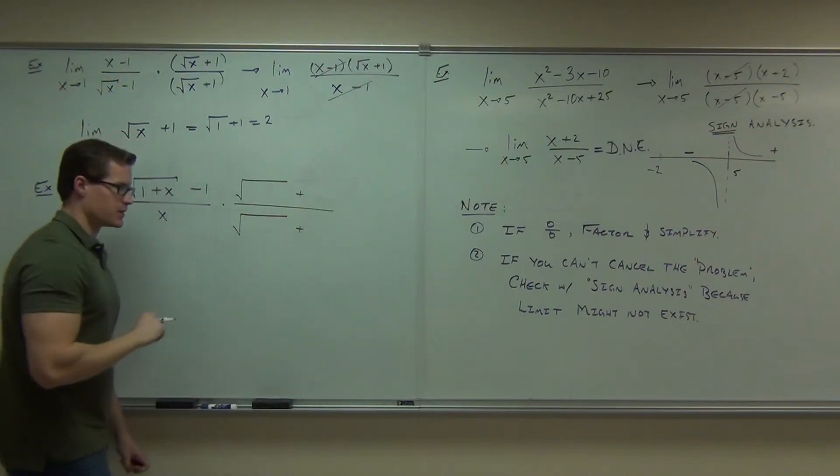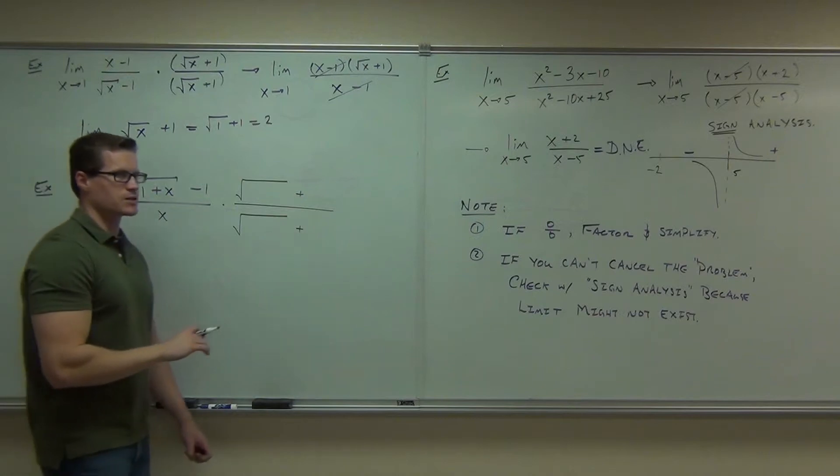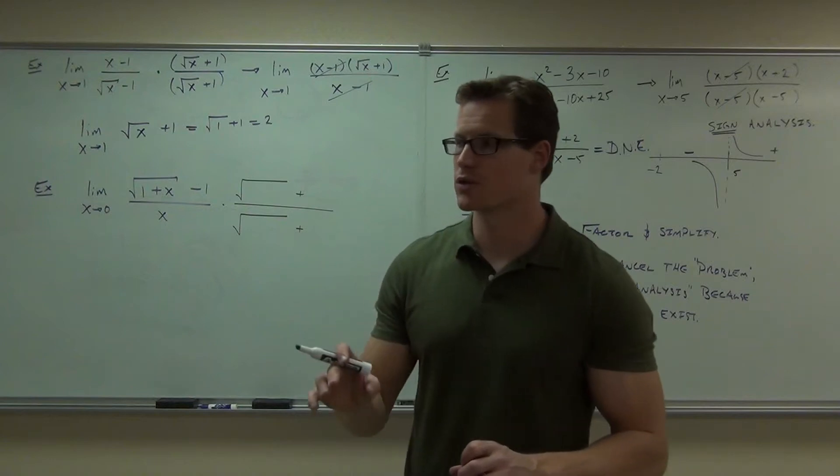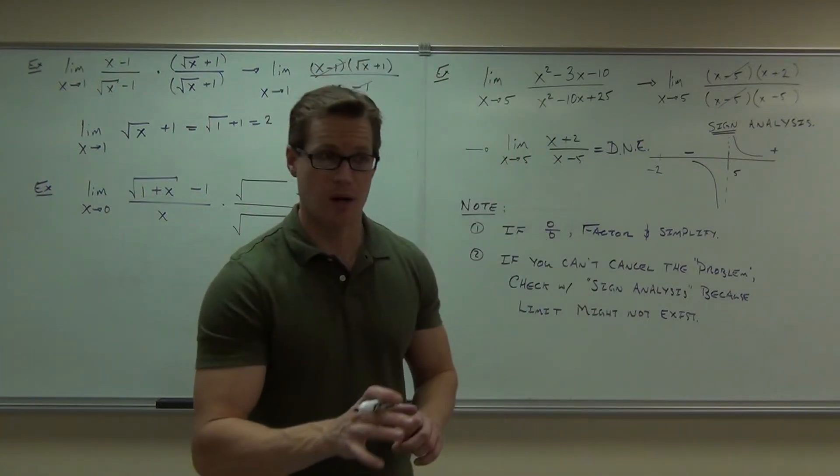Conjugates have to have different signs. They have to. It's got to be the same thing on the numerator and denominator. It has to, otherwise you're not multiplying by one, and if you're not multiplying by one, you're changing the problem. You can't change the problem.